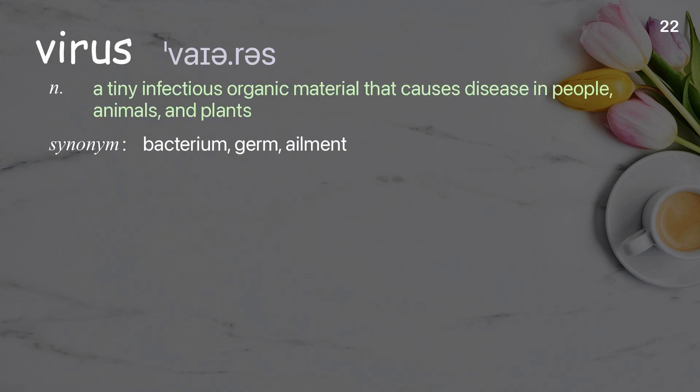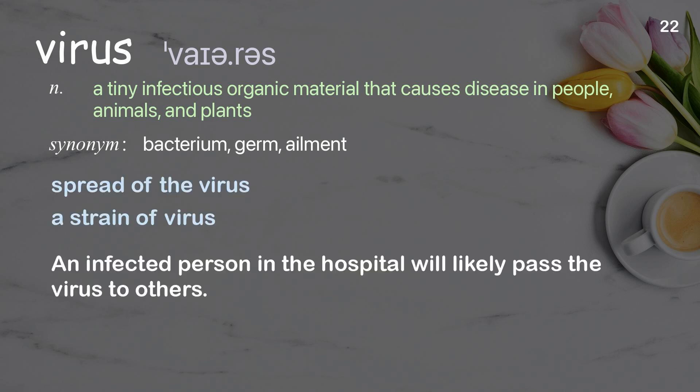Virus: a tiny infectious organic material that causes disease in people, animals, and plants. Examples: spread of the virus; a strain of virus. An infected person in the hospital will likely pass the virus to others.